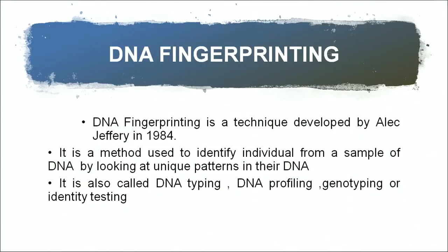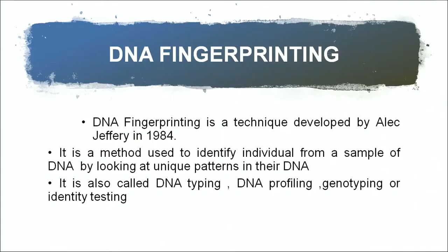Another technique used very frequently in forensic sciences or to determine paternity is DNA fingerprinting. DNA fingerprinting is a technique developed by Alec Jeffrey in 1984. It is a method used to identify an individual from a sample of DNA by looking at unique patterns in their DNA. These unique patterns in human beings come from junk DNA and repeated sequences known as VNTR - variable number tandem repeat sequences. These sequences do not code for anything, they are passed on from generation to generation, and they show a lot of polymorphism. These DNA sequences are used in DNA fingerprinting to determine identity or paternity.